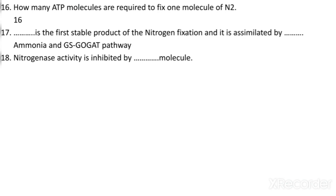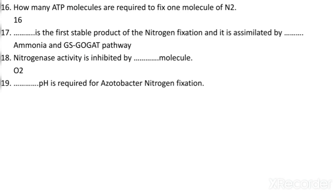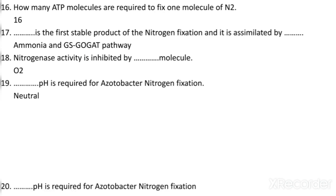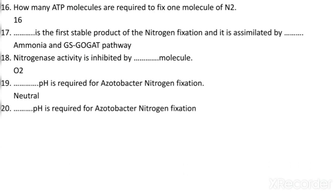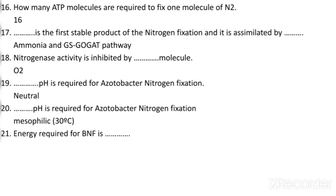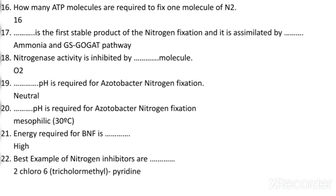Nitrogenase activity is inhibited by which molecule? It is inhibited by oxygen. What pH is required for Azotobacter nitrogen fixation? Neutral pH is required. What temperature is required for Azotobacter nitrogen fixation? Mesophilic temperature is required. The energy required for biological nitrogen fixation is very high. The best example of a nitrification inhibitor is 2-chloro-6-trichloromethylpyridine.